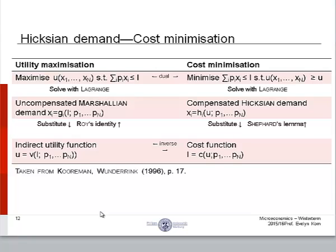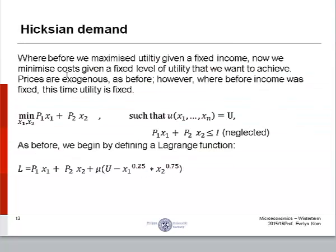OK, so here we are on part two. This is the table. We're starting from the right hand side of the table with cost minimization. Where before we were maximizing utility given a fixed income, now we minimize costs given a fixed level of utility that we want to achieve.